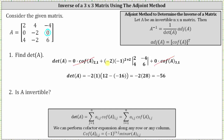Simplifying, we have negative two times negative one to the fourth power, which equals positive one. The determinant of the two-by-two is two times six, which is 12, minus negative four times four, which is negative 16. So 12 minus negative 16 equals 12 plus 16, or 28. The determinant of A is equal to negative two times 28, which is negative 56.